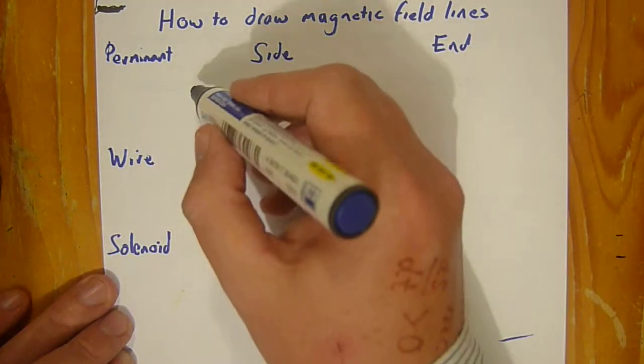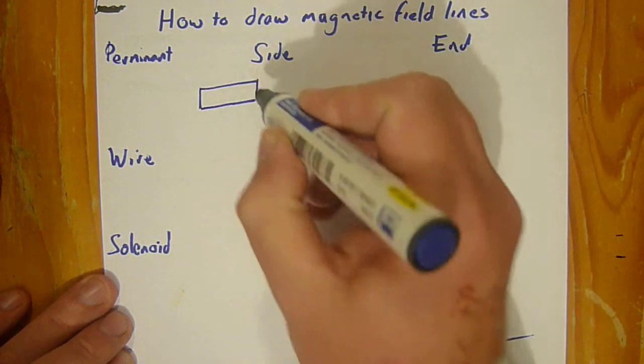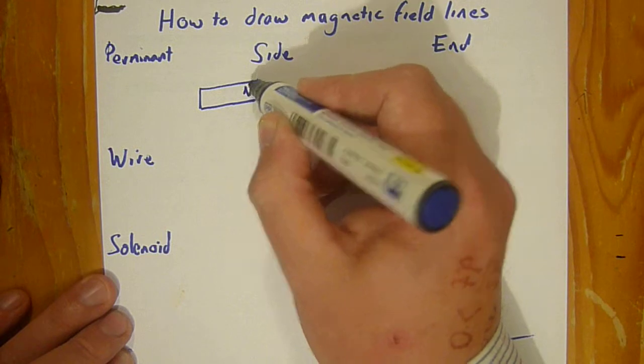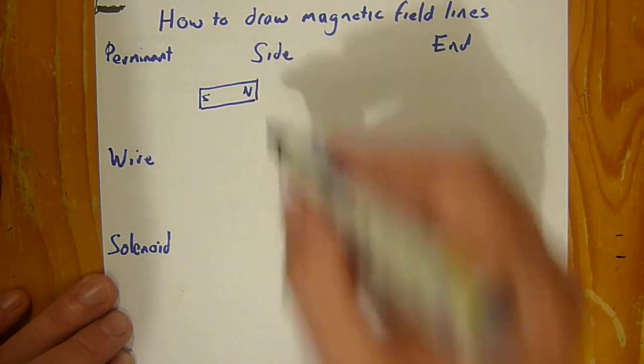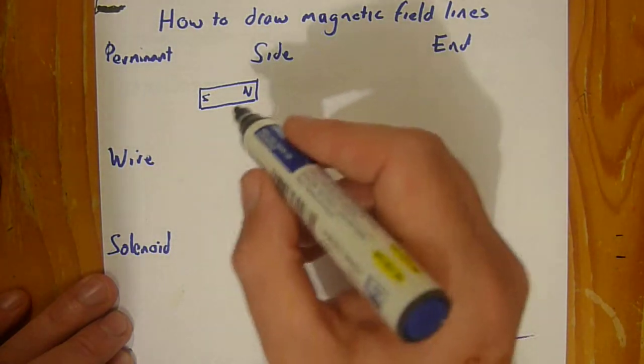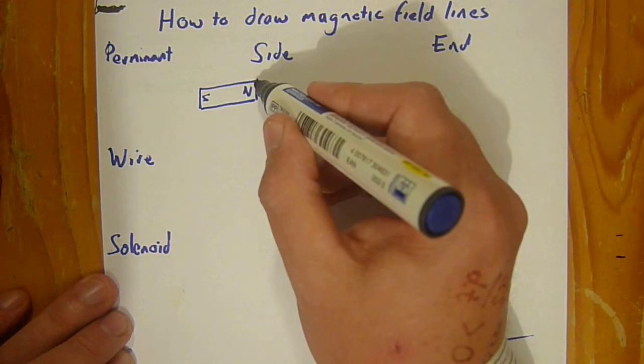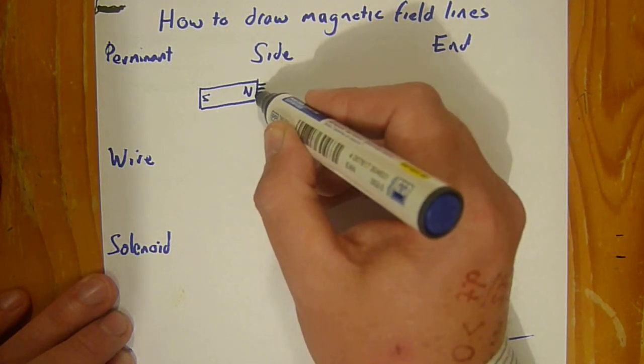In the side view for a permanent magnet, it's typically a square magnet. The most important thing is to indicate the N and S poles. Magnetic field lines go from the north to the south pole and are distributed evenly along the face because that's an even field along the face.